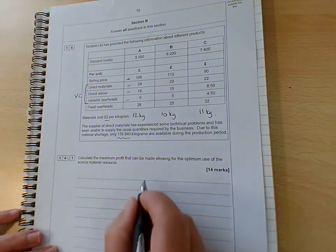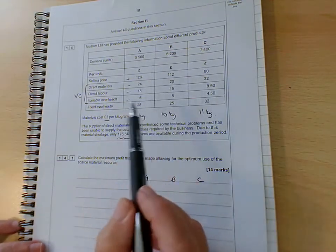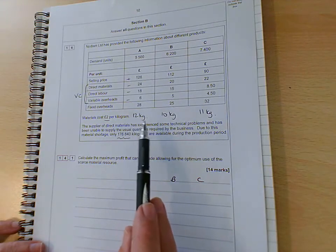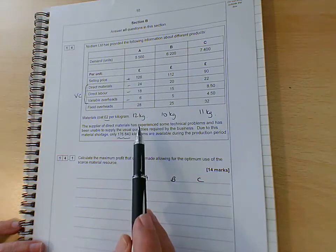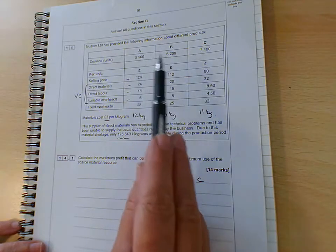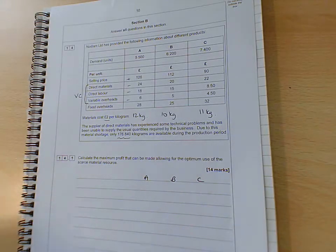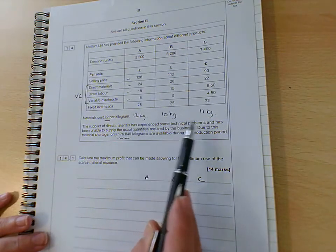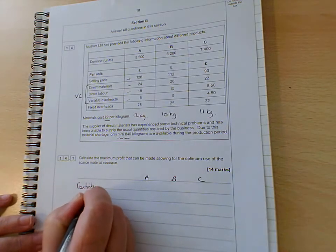So what we're going to need to do is think about how much contribution each one of these, first of all, earns us per unit. And then we're going to drill it down further and find out using these figures here, the amount of kilos of material that go into each product, how much contribution each one of these products earns us per kilo of raw materials. And we'll then be able to rank them one, two and three, concentrate our efforts on making the highest ranked ones, the ones that earn us the greatest contribution, not per unit, but per kilo of raw materials. So we're going to find the contribution per unit first of all.